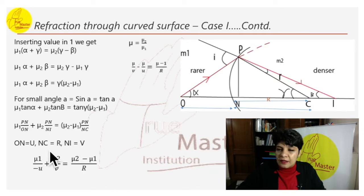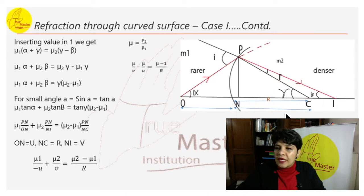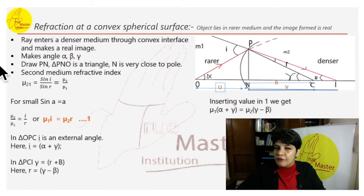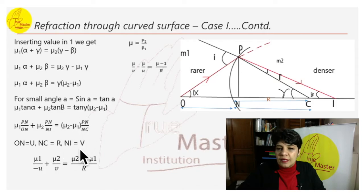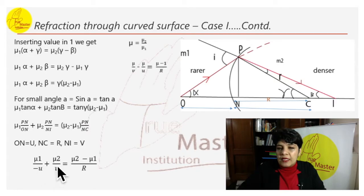NC is the radius because C is the center of the spherical surface, so NC equals R. NI is the image distance, so NI equals v. Substituting these: PN cancels throughout. We derive the refraction formula: mu_1 over (−u) + mu_2 over v = (mu_2 − mu_1) over R.